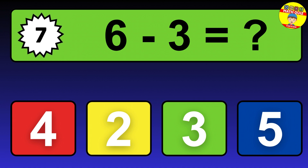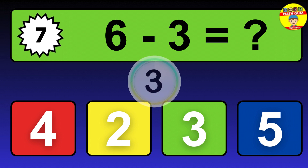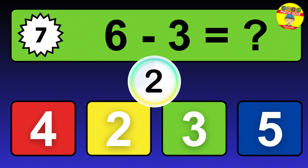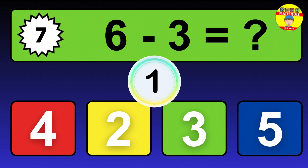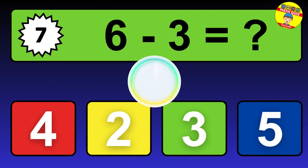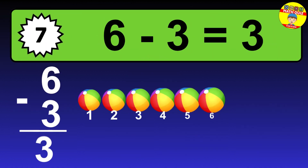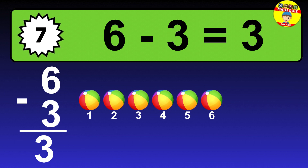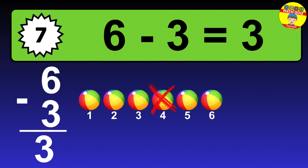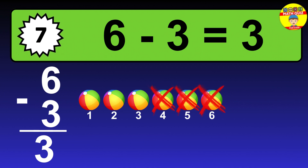Question 7. 6 minus 3 equals what? The answer is 6 minus 3 is 3. Let's count it: 1, 2, 3.